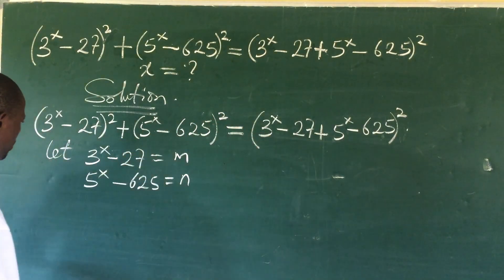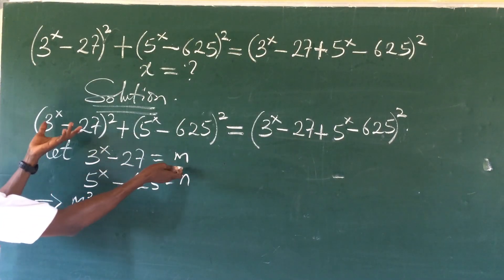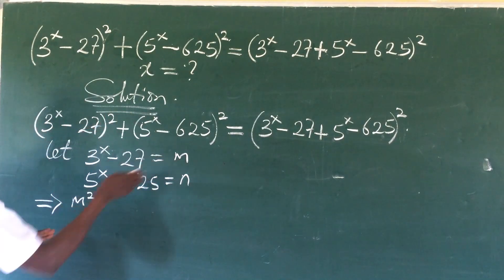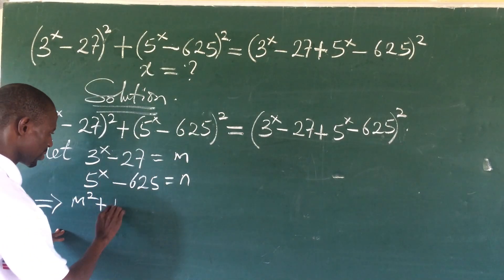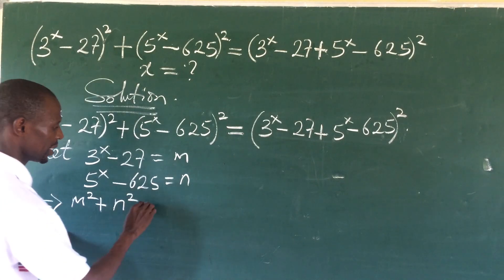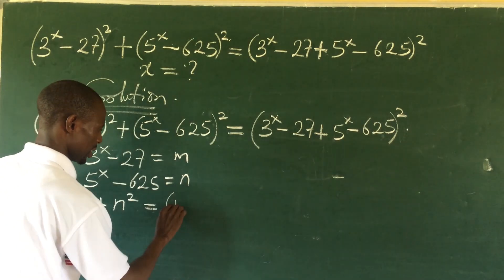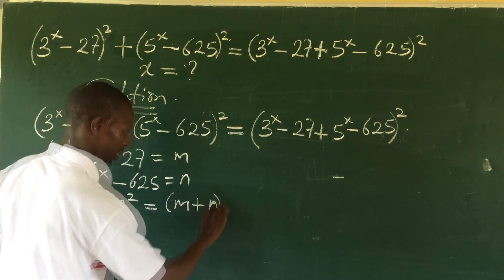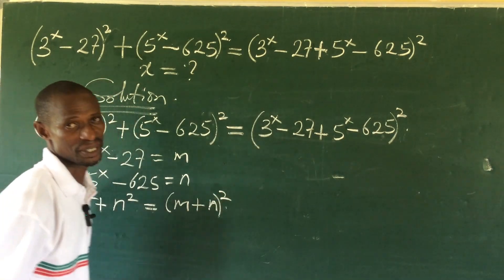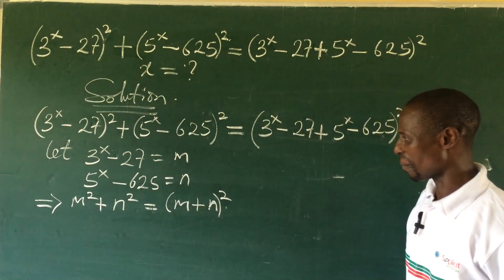With this in mind, we can rewrite the whole expression. This now gives us m² — because that whole term is raised to power 2 — plus n² = (m + n)². The lengthy expression has been reduced to this format.